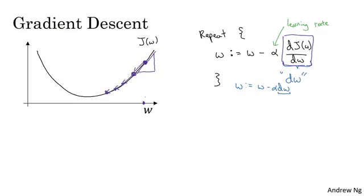As another example, if w was over here, then at this point, the slope here, or dJ/dw, will be negative. And so the gradient descent update would subtract alpha times a negative number, and so it would end up slowly increasing w, making w bigger and bigger with successive iterations of gradient descent. So hopefully, whether you initialize on the left or on the right, gradient descent will move you towards this global minimum here.